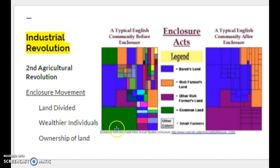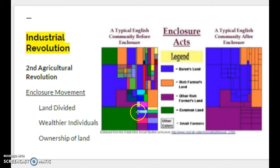You can see a checkerboard sketch showing all these little plots of land, and then after, you can see how those are grouped into large land masses. The concept is that these fragmented small plots weren't as efficient as large consolidated plots where wealthier landowners could begin experimenting with more efficient agricultural methods. These wealthy landowners were allowed to gobble up or buy this land from small farmers.